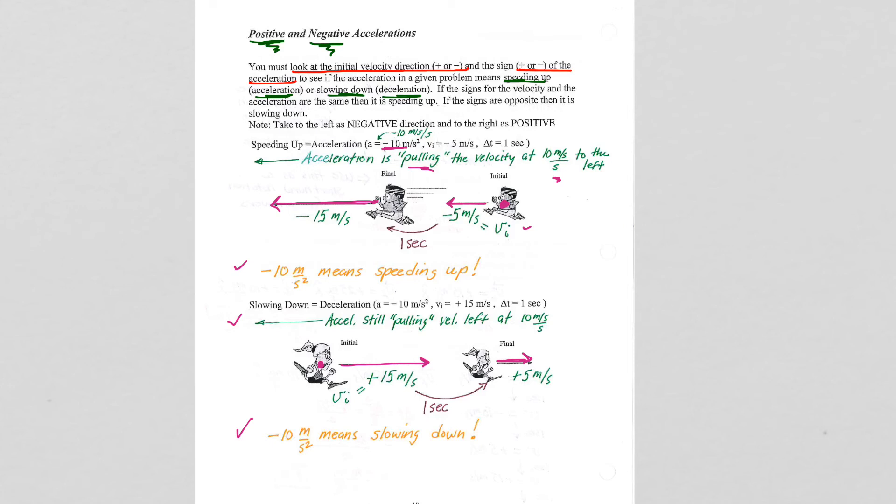If you understand this page of notes, then you know to answer the question is very easy. If the acceleration and the initial velocity are in the same direction, either both backwards or both forwards, that means you're speeding up. If the acceleration and the initial velocity are in opposite directions - opposite at all. So, the acceleration can be backward, the velocity forward, or the velocity backwards, the acceleration forward. If they're opposite, then that means slowing down.